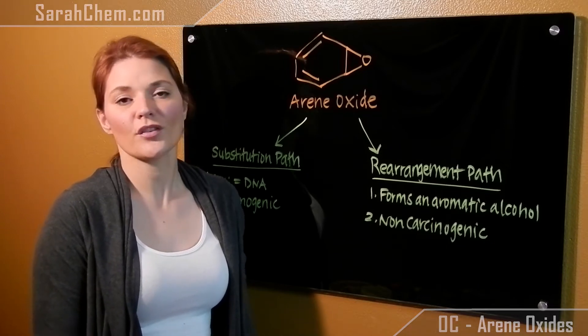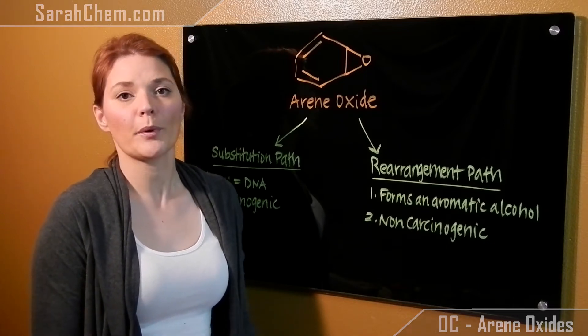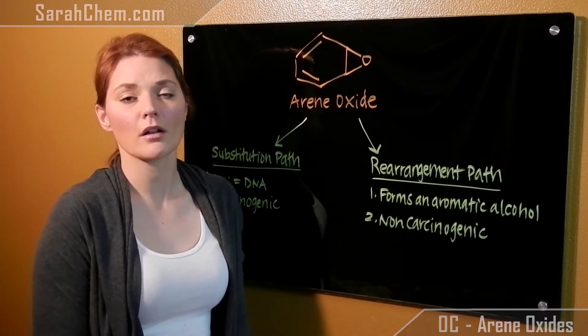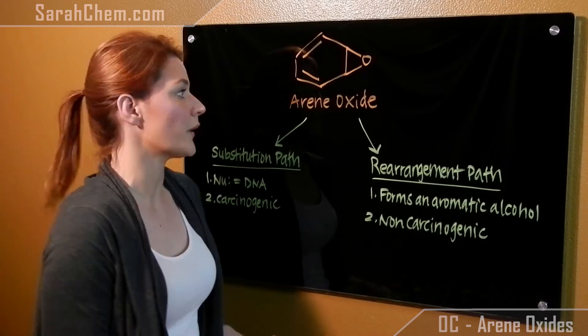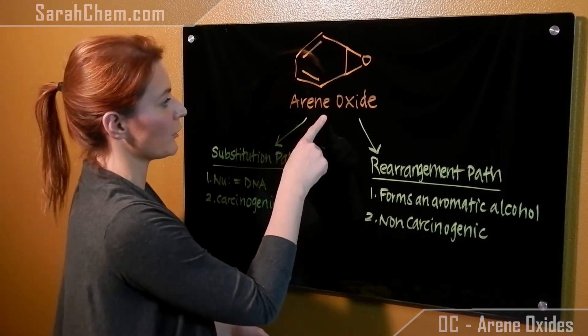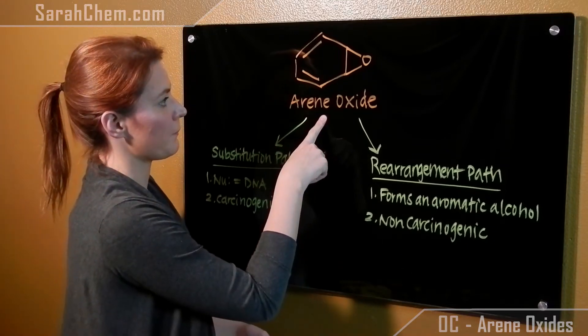So if you swallowed some benzene, your body would use something called cytochrome P450 and oxygen to turn it into an arene oxide, which looks like this.